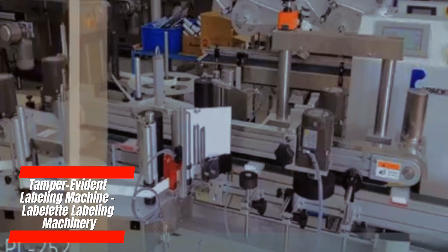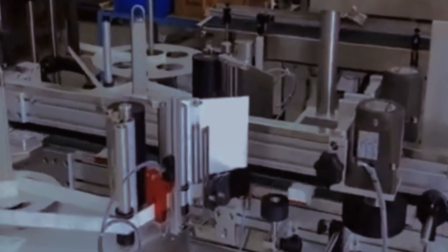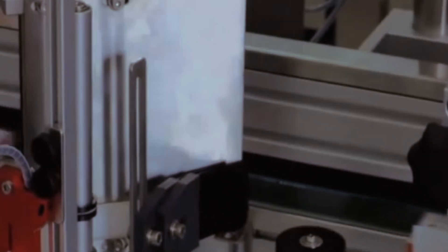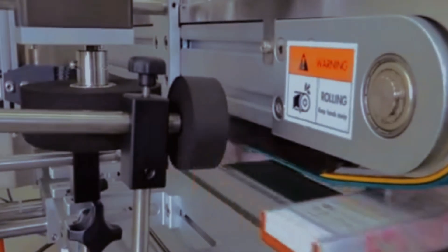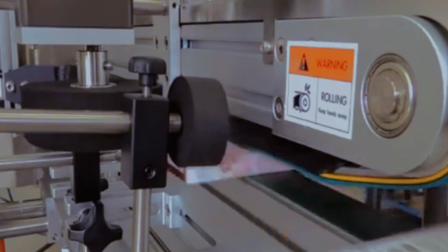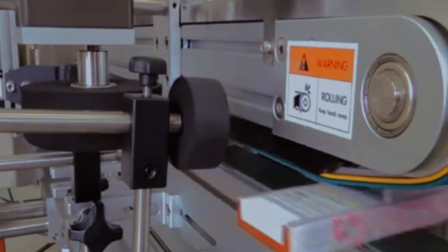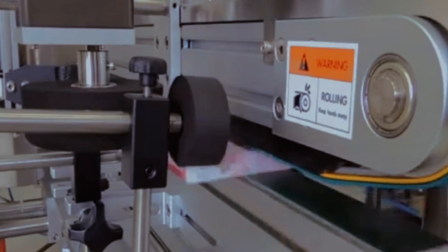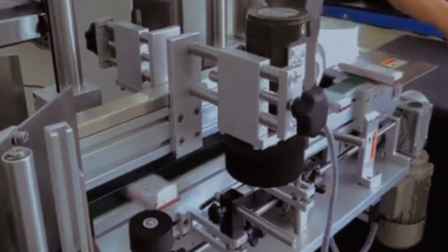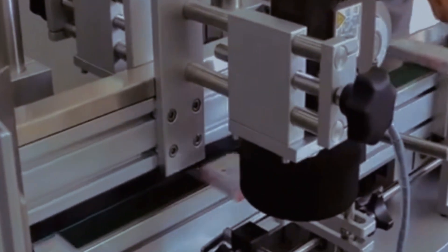Labelette Labeling Machinery specializes in tamper-evident labeling solutions, offering a range of machines designed to apply security seals and tamper-evident labels to food products. These machines feature tamper-proof label applicators and advanced sealing mechanisms to ensure product integrity and consumer safety. Labelette's tamper-evident labeling machines are customizable to accommodate various packaging formats and labeling requirements, providing food manufacturers with comprehensive security solutions. The machine's robust construction and reliable performance make them essential components of food packaging lines where product authenticity and protection are paramount concerns.